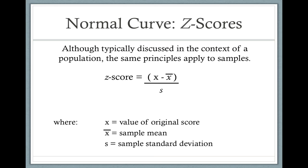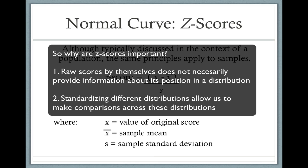So z-scores tell us the number of standard deviations an individual score is above or below a mean. Why are z-scores important? There are two main reasons. One, a raw score by itself does not necessarily provide information about its position in a distribution. And number two, standardizing different distributions allows us to make comparisons across these distributions.